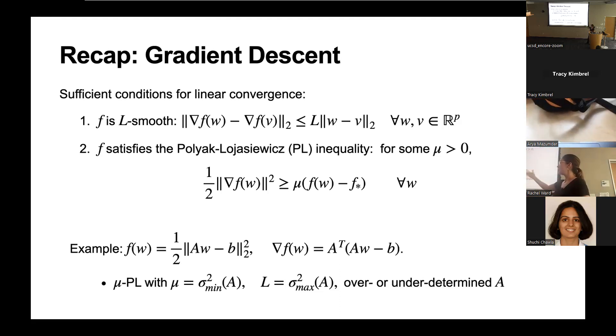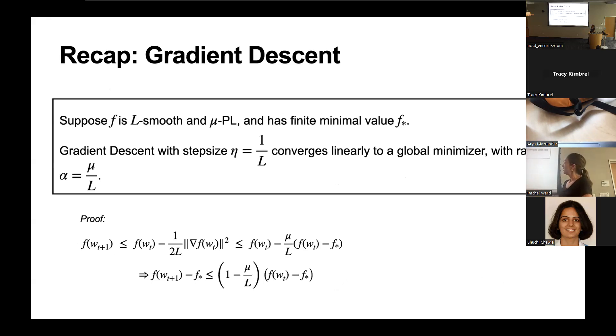As an example, if the loss function is linear regression, even if the matrix A is underdetermined, so it's short and fat, and there is a whole affine space of global solutions, the actual condition number of the matrix A transpose A is the linear convergence rate in over- or underdetermined settings.